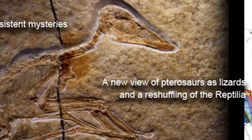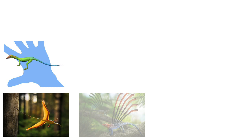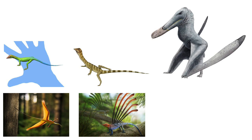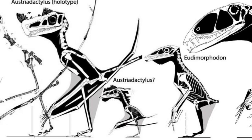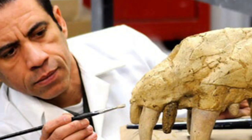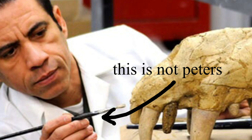He also thinks that Sharovipteryx, Cosesaurus, Longisquama, and Langobardosaurus were close relatives of pterosaurs — none of these reptiles are actually related. In 2007 he named his new group Fenestrasauria. Peters doesn't usually examine fossils like most paleontologists, but instead Photoshops images of them. With these he claims to see clues no one else can within the fossils, and this has led to bizarre skeletal reconstructions.